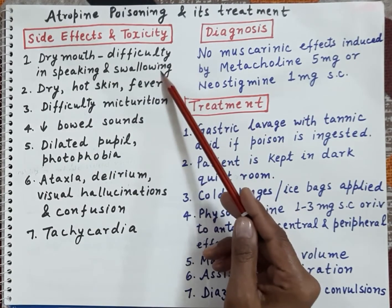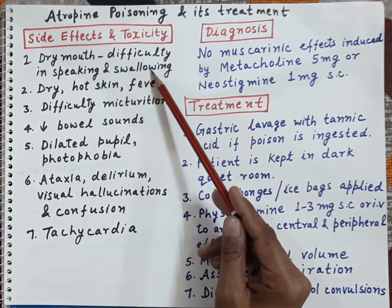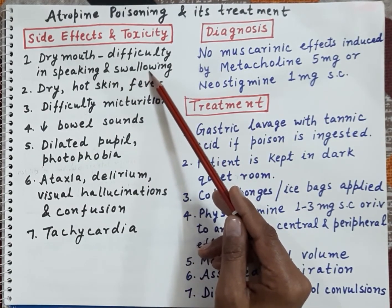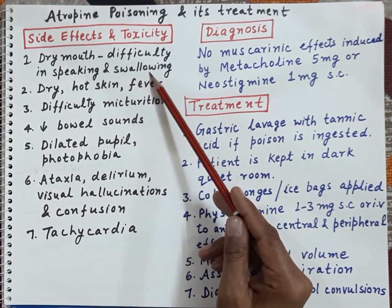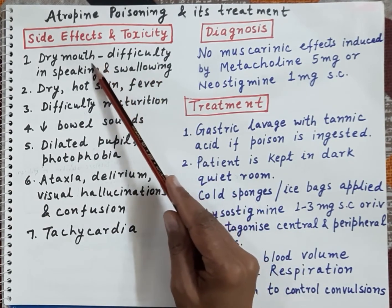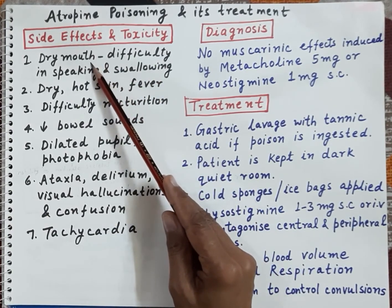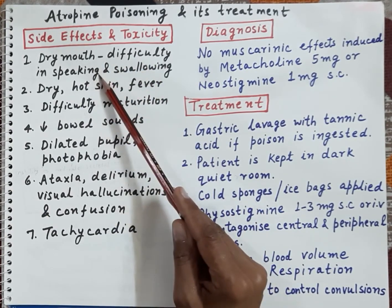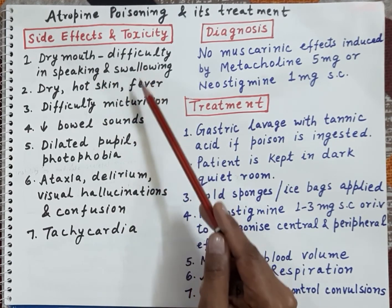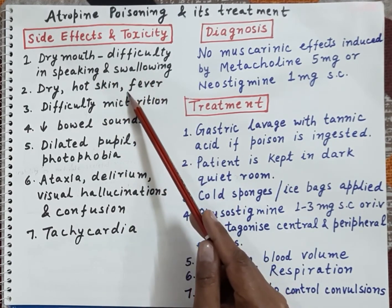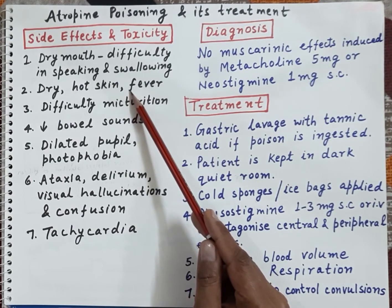The first symptom is dry mouth. Acetylcholine increases the secretion of saliva, whereas atropine antagonizes secretion of saliva. Therefore atropine causes dry mouth, difficulty in talking, and difficulty in swallowing. Atropine also reduces the secretion of sweat.